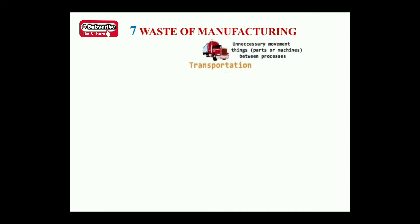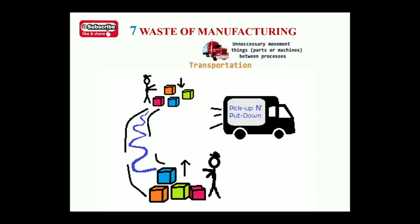Starting with transportation - transportation means unnecessary movement of things, such as parts or machines between processes. When raw material is converted into finished products, transportation occurs from the storage department to different machines - machine number one, two, three, four - according to the different operations carried out on the components. Finally, products move to the dispatch department and then to customers. All of this is considered transportation, and the wasted time and money involved is a waste in manufacturing.